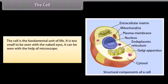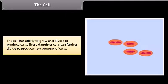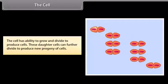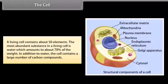The cell is the fundamental unit of life. It is too small to be seen with naked eyes; it can be seen with the help of a microscope. Cells are packets of chemicals essential for life. The cell has the ability to grow and divide to produce daughter cells, which can further divide to produce new progeny. Cells may be combined to form tissues, tissues into organs, and organs into organisms. A living cell contains about 50 elements; the most abundant substance is water, which amounts to about 70% of the weight, plus a large number of carbon compounds.